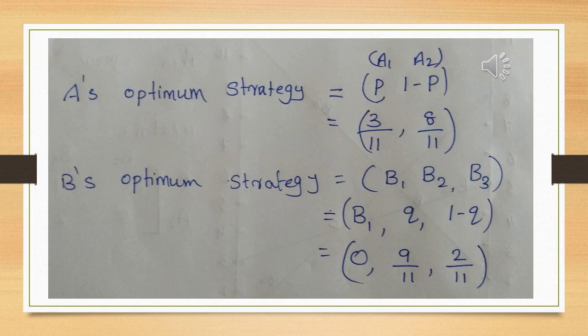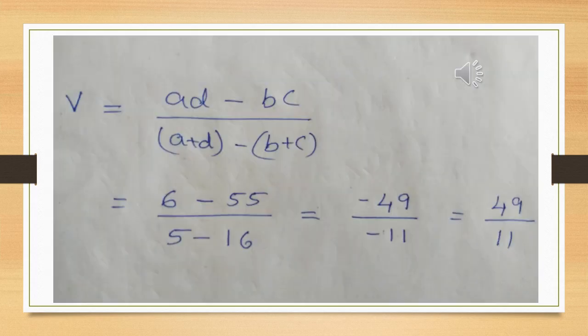As per the above calculations, the optimum strategy is: P(A1) = 3/11 and P(A2) = 8/11. For player B: P(B1) = 1/11, P(B2) = 9/11, and P(B3) = 2/11 — with B1 effectively being 0 since it was ignored. The value of the game is also determined from these calculations. The graphical method is easy to apply.